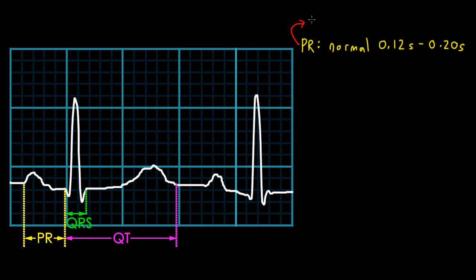A PR interval that's greater than 0.2 seconds is called prolonged. Most commonly this is due to increased AV conduction delay, such as what is seen in a first degree AV block. A first degree AV block represents a consistently prolonged PR interval.